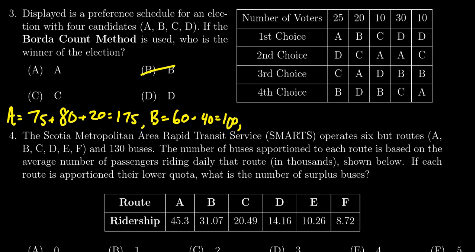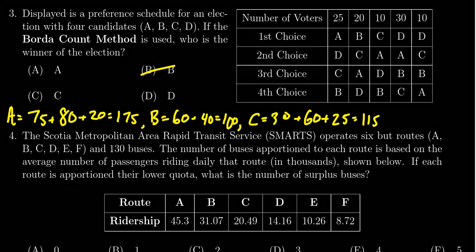We only have to find the winner so it's not B. How about C here? So candidate C is in first place 10 times, so that's gonna be worth 30 points. Candidate C is in second place here and here, so that happens 30 times. We times that by 2, you're gonna get 60. And then how about in third place, that happens 25 times. 30 plus 60 is 90 plus 25 gives 115, and so that is much less than A, so C is not the winner.